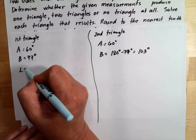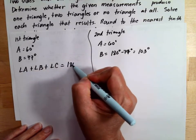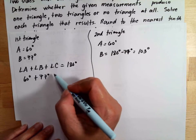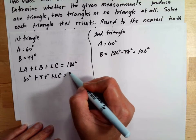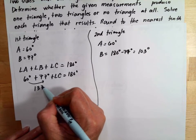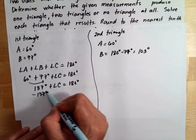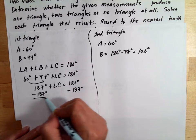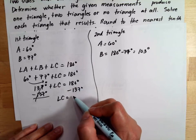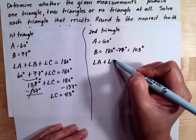Next, solve for angle C in the first triangle. Angle A plus angle B plus angle C equals 180 degrees. With angle A equal to 60 degrees and angle B equal to 77 degrees, we get 137 plus angle C equals 180 degrees. Subtracting 137 degrees gives angle C equal to 43 degrees.